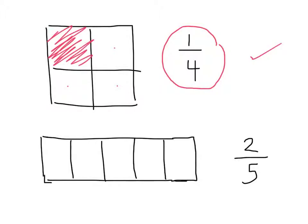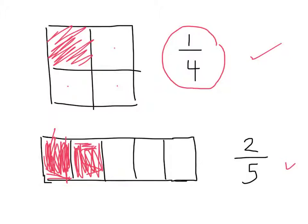Can you show me two out of five? Good. How do I know that this is two out of five? How many did you color in? Two — one, two. And how many sections are there altogether? One, two, three, four, five. So you colored in two out of five.